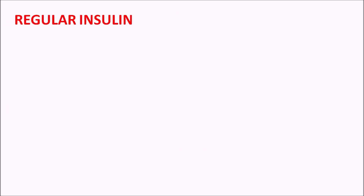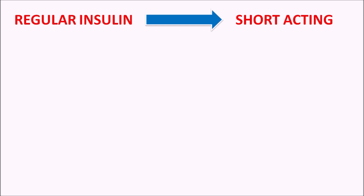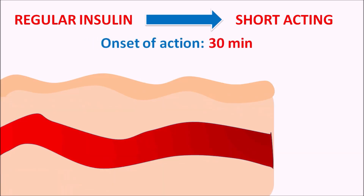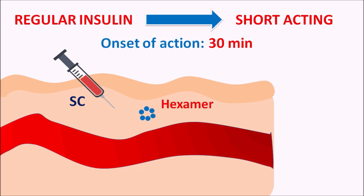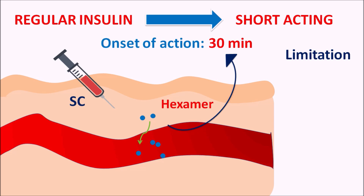Regular insulin is also called short-acting insulin. One limitation is its short duration of action and an onset of action of 30 minutes. When given by subcutaneous route, insulin forms hexamers at the injection site that are not readily absorbed; they must be cleaved into monomers and dimers before absorption into systemic circulation, causing a delay in onset.